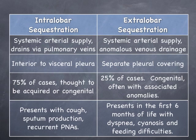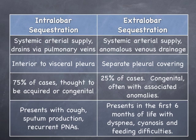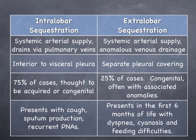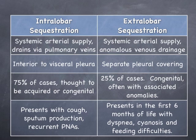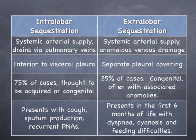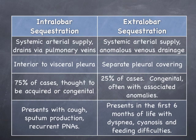Extralobar sequestrations have anomalous arterial supply and venous drainage. While both types of sequestrations are most commonly seen at the left lung base, extralobar sequestrations are usually between the lower lobe and the diaphragm, while intralobar sequestrations are, well, intralobar. Extralobar sequestrations can be found in a variety of locations, including the mediastinum, pleural or pericardial spaces, within the diaphragmatic tissue, and even in the retroperitoneum.